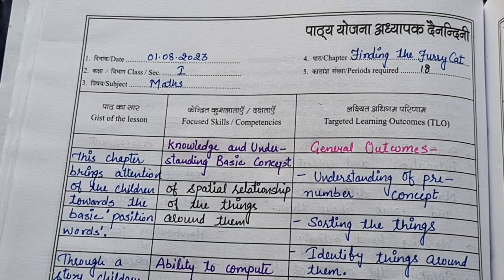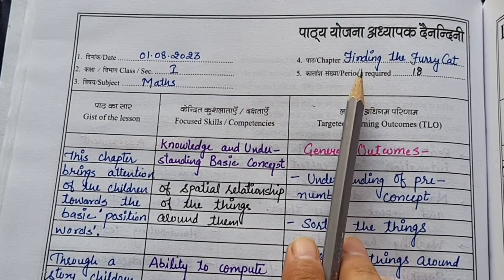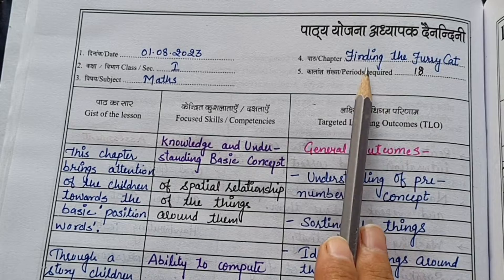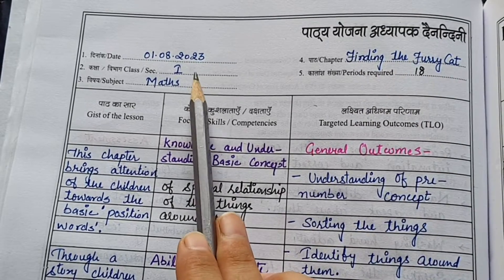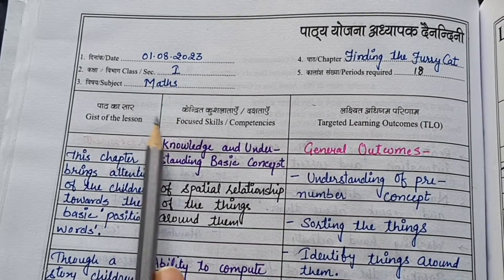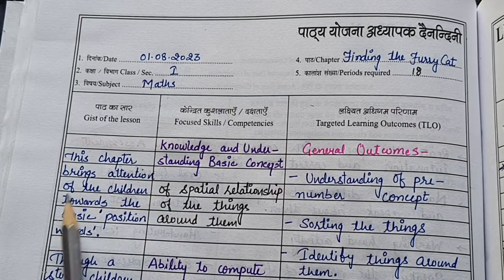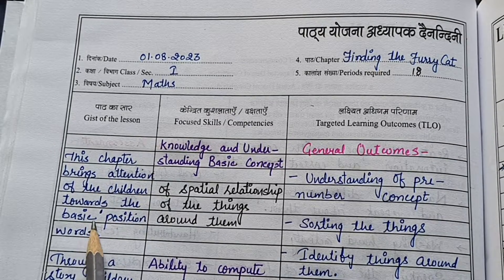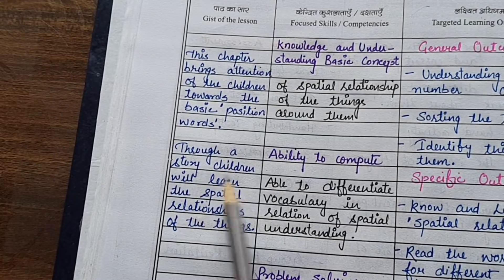Hello dear teachers, welcome to my channel. Now talking about the lesson plan for the chapter 'Finding the Furry Cat' of Class 1 Maths. The gist of the lesson: this chapter brings the attention of children towards basic position words, meaning through a story, children will learn the spatial relationships of things.